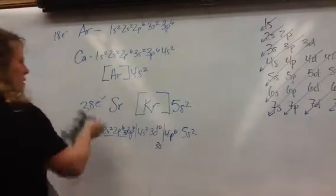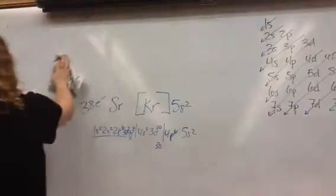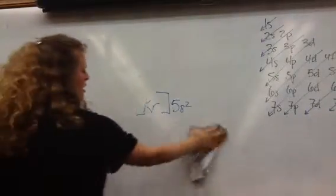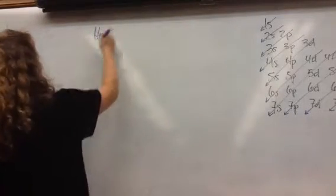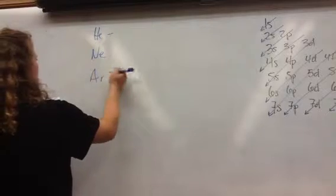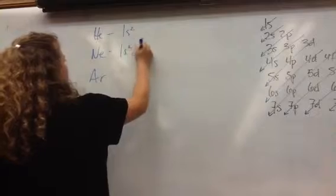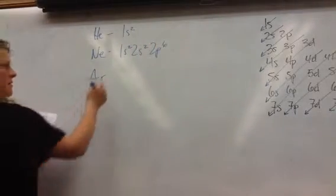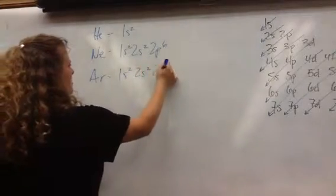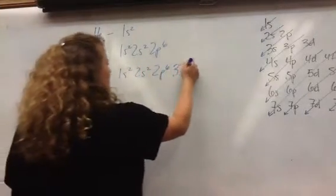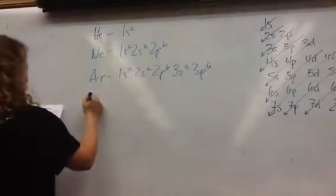Here's what I want you to do. Write the electron configuration for helium, neon, and argon. Right on top of one another. Helium is 1S2. Neon is 1S2, 2S2, 2P6. Argon, 1S2, 2S2, 2P6, 3S2, 3P6. Let's go ahead and throw krypton in there.